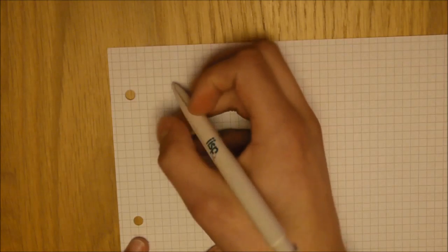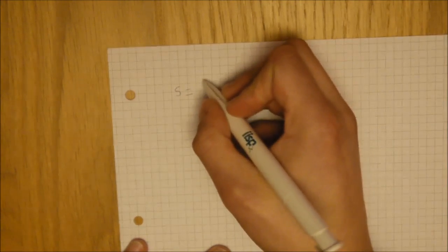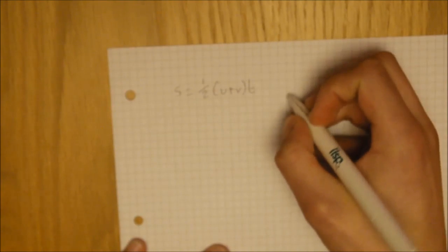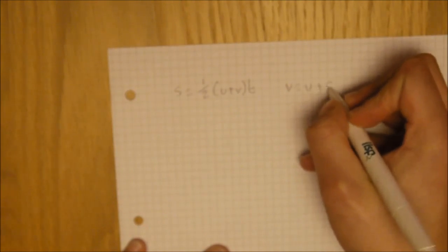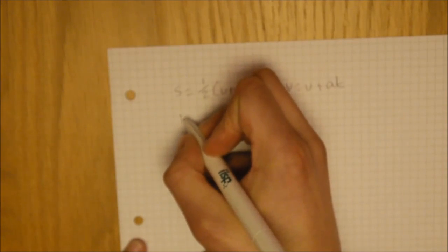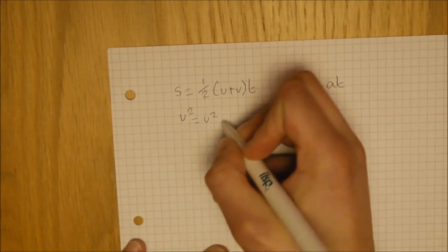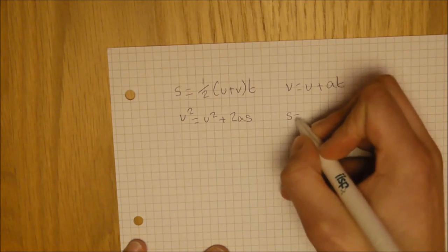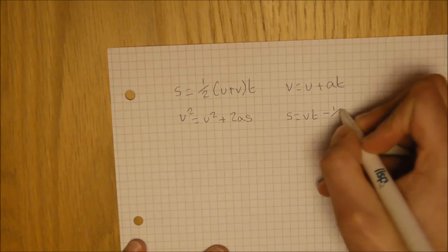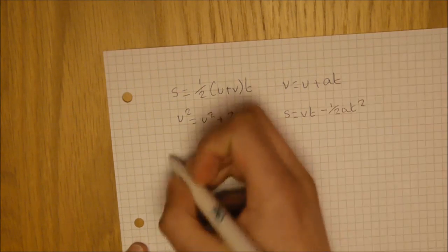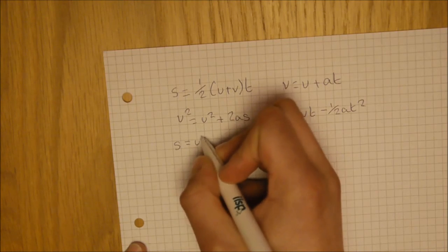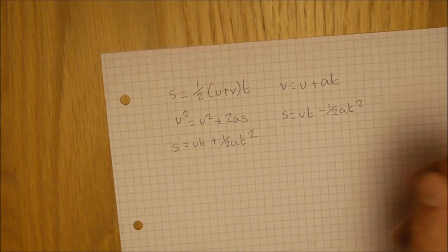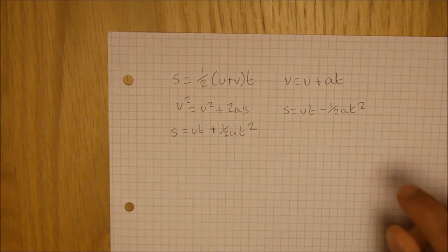But the five equations definitely are. They are S equals half U plus VT, V equals U plus AT, V squared equals U squared plus 2AS, S equals VT minus half AT squared, and S equals UT plus half AT squared. Those are the five equations you need to know. Hopefully you can see them fairly clearly on the video.